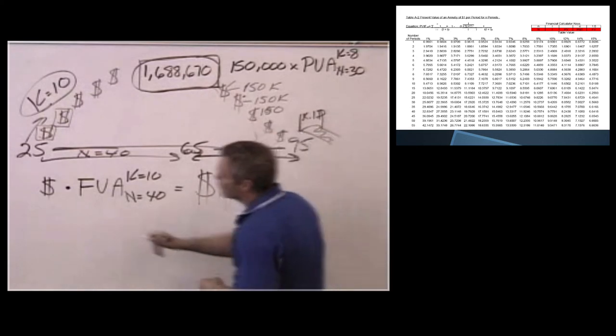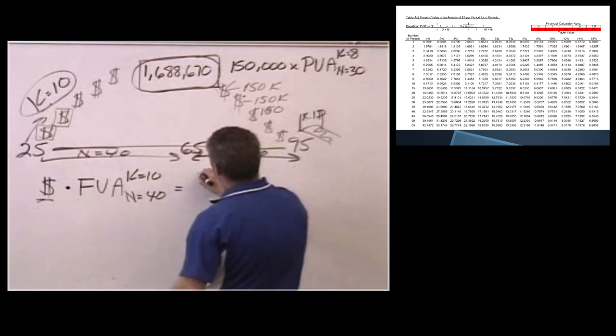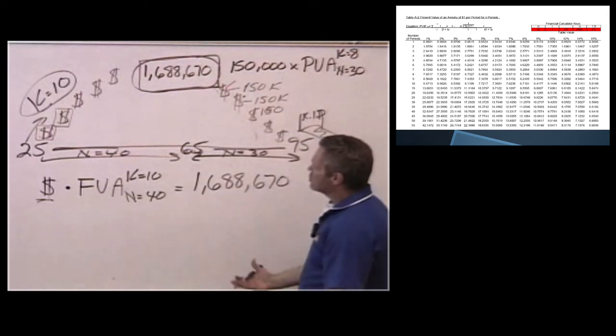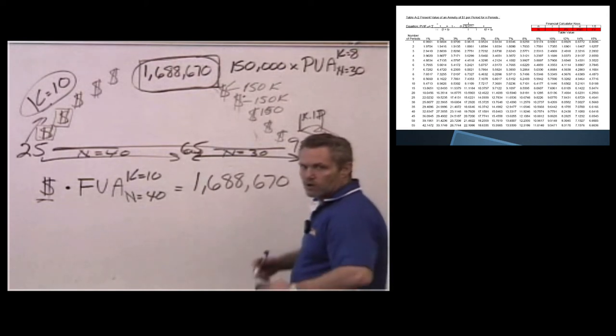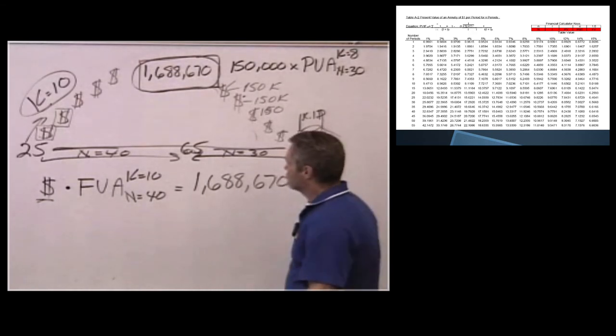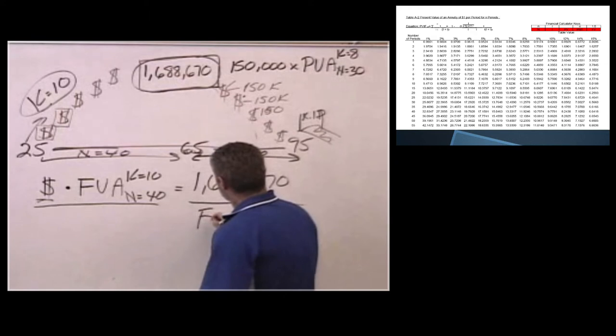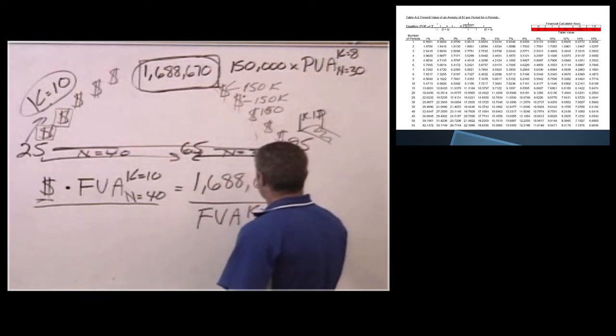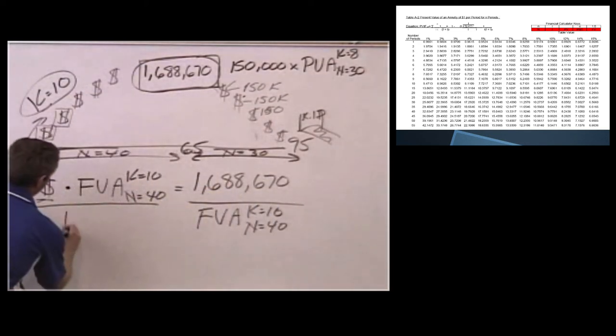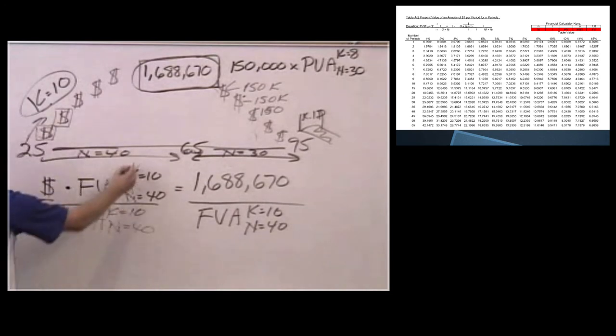However, for this question, we don't have this number, but we do have this number over here, which is $1,688,670. So how are we going to solve this equation? Well, we have to go all the way back to fourth grade and we do the old isolate X type of calculation. So what I'm going to do is divide both sides by the same thing. I'm going to divide by the future value of an annuity, K equals 10, N equals 40. And on this side, future value of an annuity, K equals 10, N equals 40. These two cancel each other out.